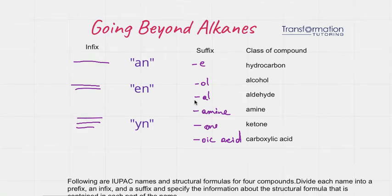Going beyond alkanes. This chart tells us how to name compounds other than alkanes. So the name will consist of a prefix. The prefix will be before infix and suffix, and it will tell us how many carbons there are.